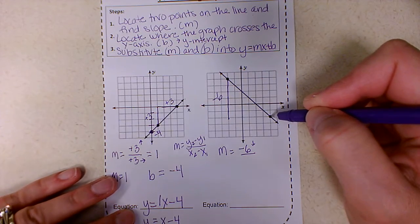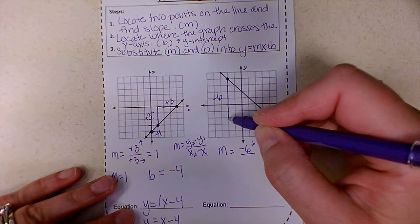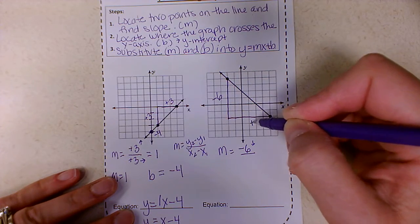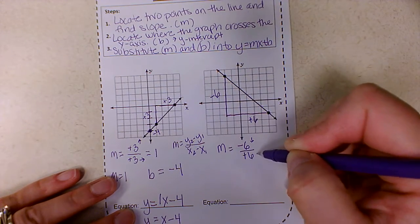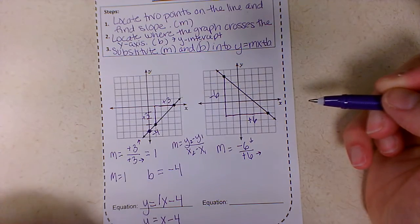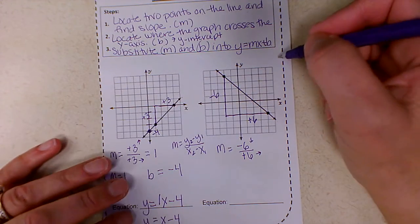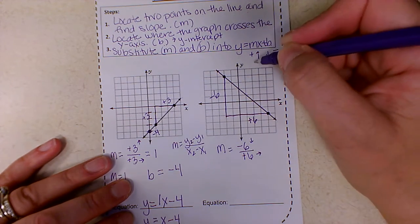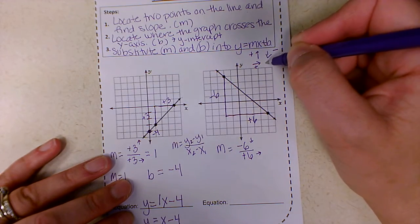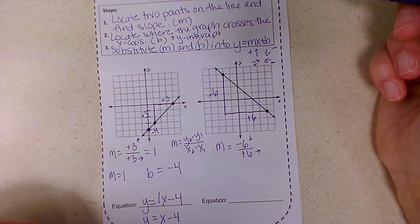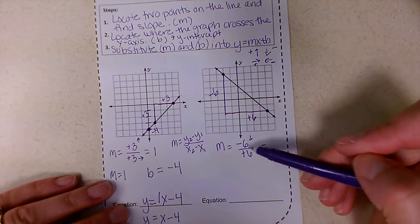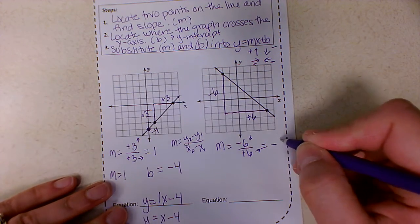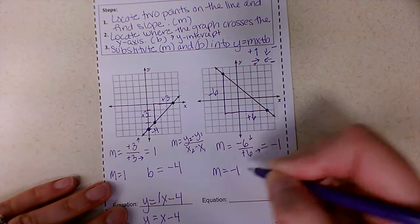And now I'm going to have to count to the right boxes because I have to end up at this point over here. So let's count one, two, three, four, five, six. So I went to the right six boxes, and to the right is positive. So remember when we count down, it's going to be negative. When we count up, it's going to be positive. When we count right, it's going to be positive. And we go left, it's going to be negative. So I'm going to look at this fraction. I can simplify this. So negative six divided by positive six is going to be negative one. So my slope is negative one.